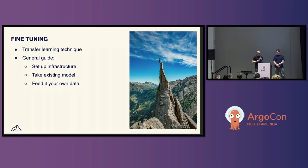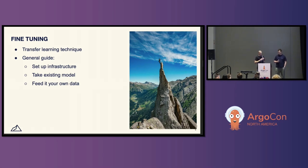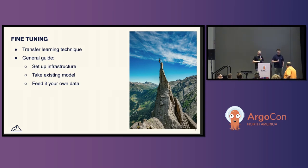Fine-tuning is generally a transfer learning technique. You're taking the knowledge embedded in a model already trained on a particular task and transferring that to your specific domain. By giving it more of your own data, you make it better at a task you're interested in. For example, Meta's Llama 2 hasn't been trained on your proprietary data, but you can feed it your own examples to do better at your particular application. There are multiple stages: setting up infrastructure, getting access to models, and feeding them your own data.